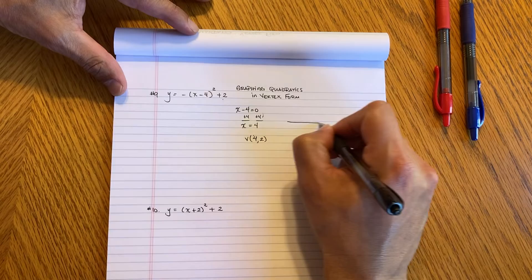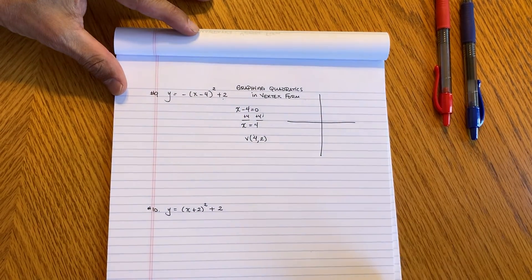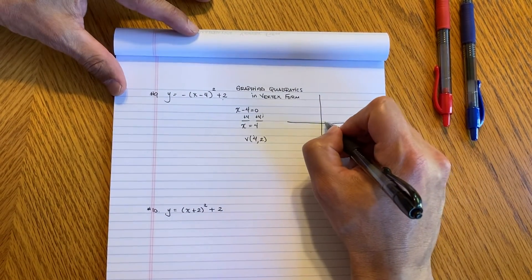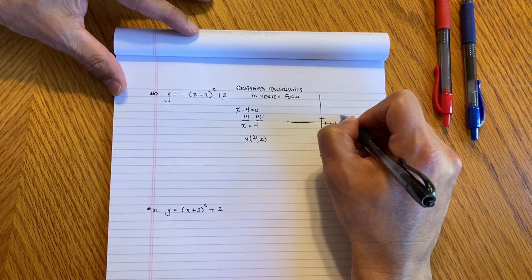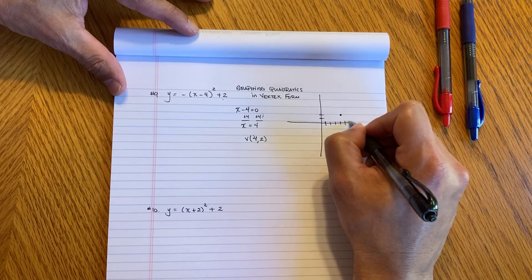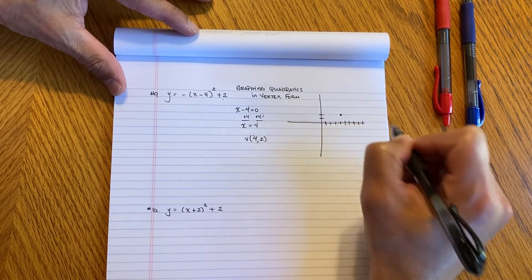So when I go ahead and graph it, and sorry it's not going to be as neat as I would like. But you got 1, 2, 3, 4 and then 1, 2. So this is my vertex. And then we just make a little bit a few more lines.